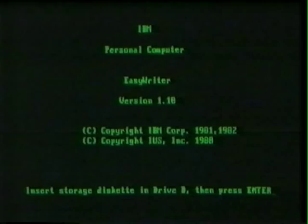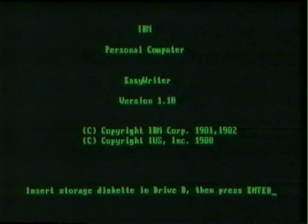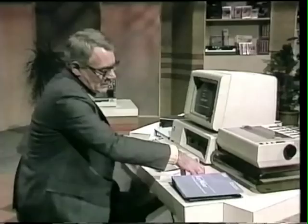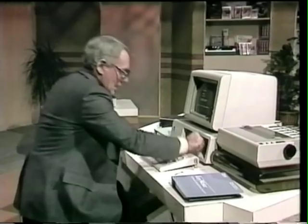There's one already set up on the IBM personal computer. Insert storage diskette in drive B. And then press enter. Where's enter? It's the large key with the arrow bent to the left.